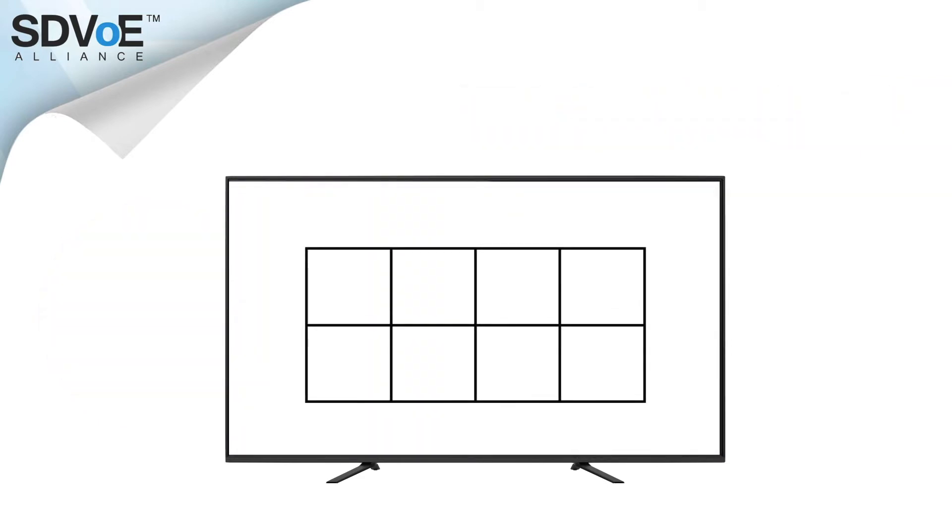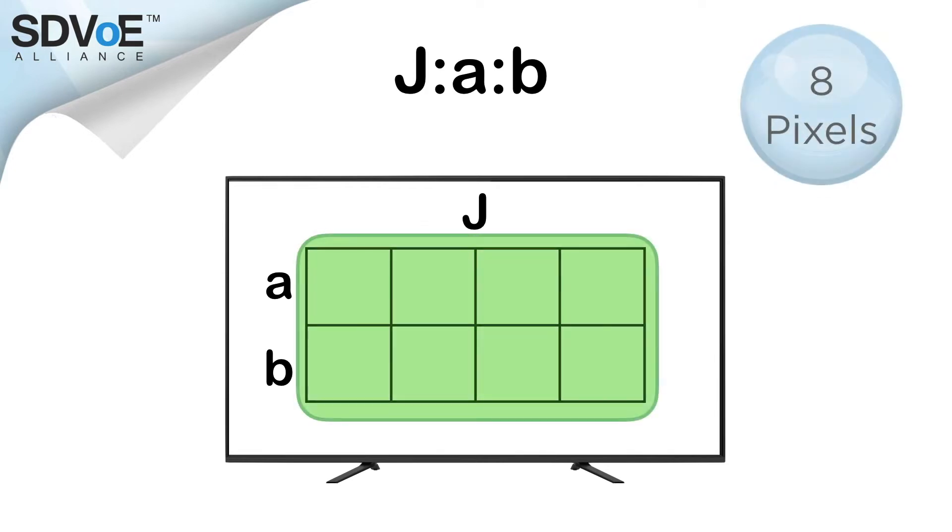Let's start with a simple grid consisting of two rows and four columns. We need to reference the amount of columns with a single letter, in this case J, and finally each of the rows as A and B. Now we have our chroma subsampling ratio, and our grid represents individual pixels on a screen. So in this case, we have a block of 8 pixels.